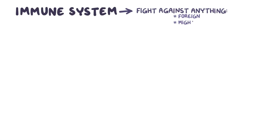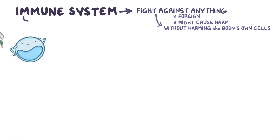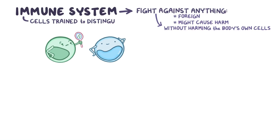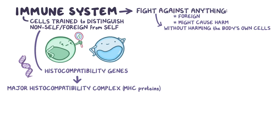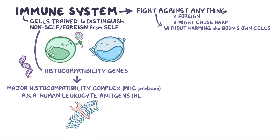Normally, the immune system's job is to fight against anything foreign that might cause harm without harming the body's own cells. To make that work, the immune system's cells are trained early on to distinguish the body's own cells, called self-cells, from foreign cells, called non-self cells. Recognizing whether a cell is foreign or not involves a set of genes called the histocompatibility genes, which make up the major histocompatibility complex, or MHC proteins. These MHC proteins also go by the name human leukocyte antigens, or HLA.